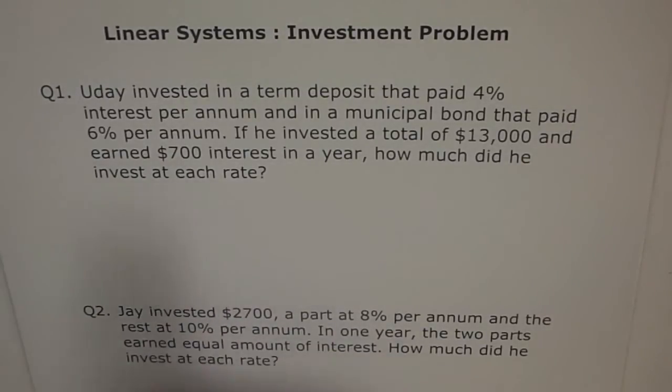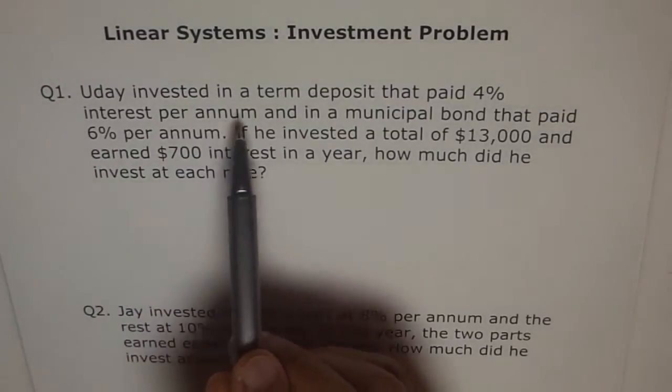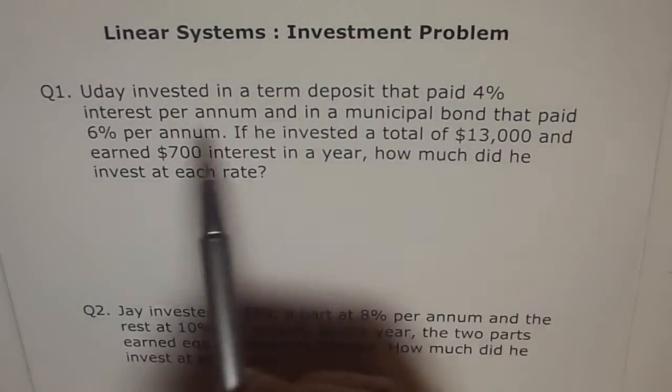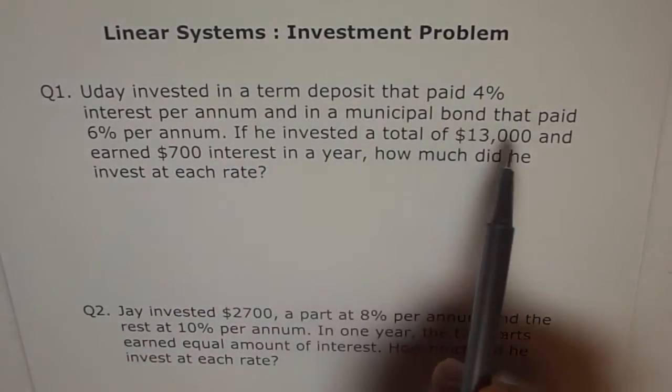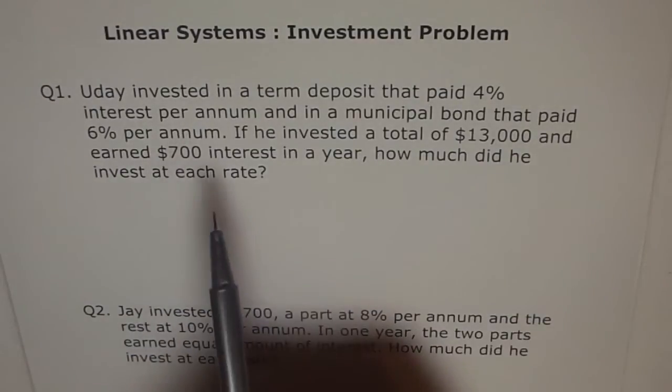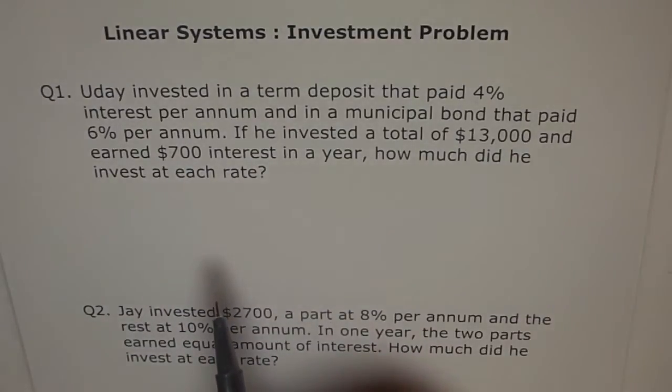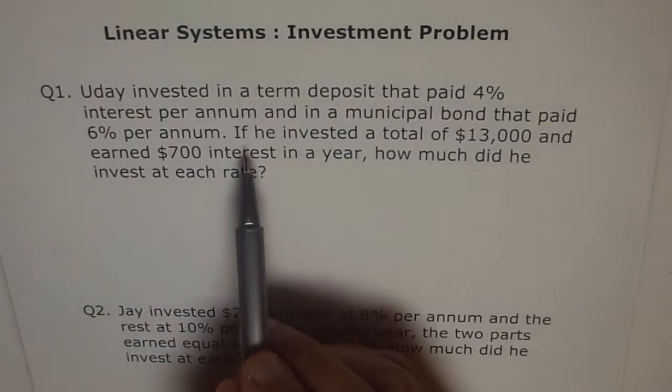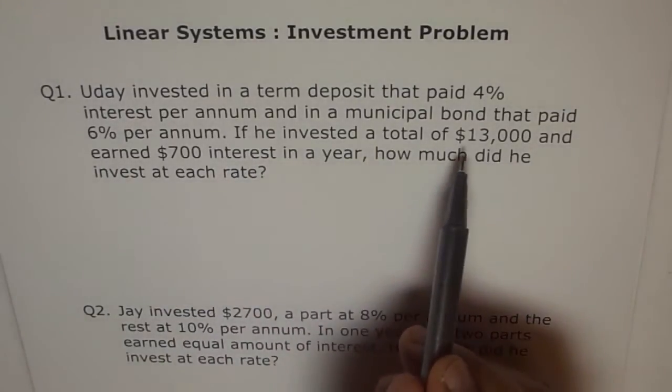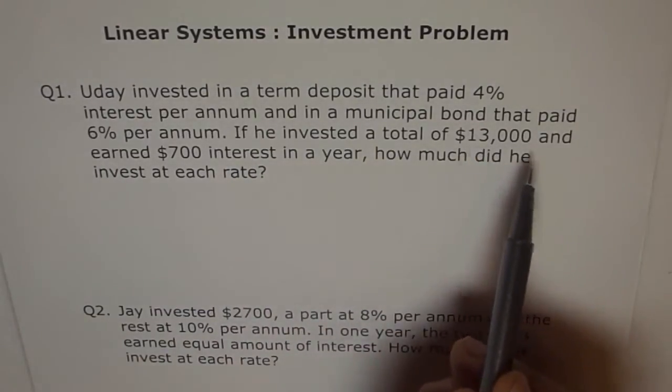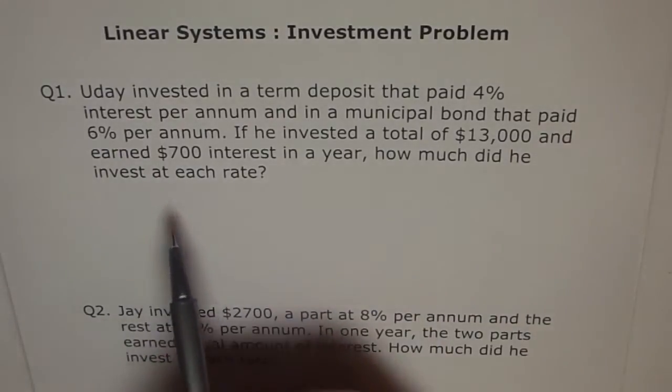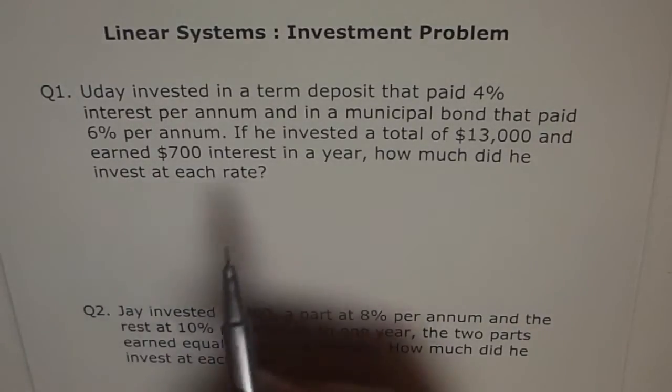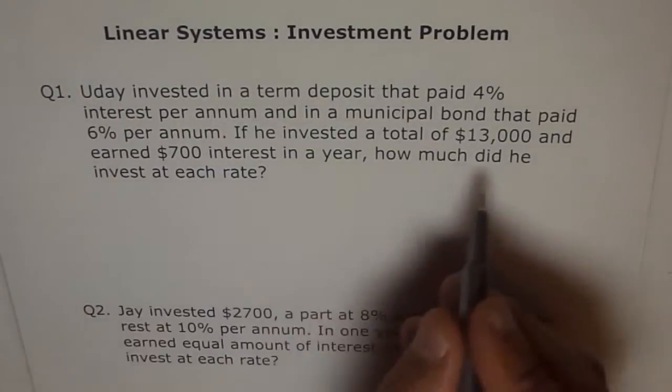Let's try to understand. Read it again. Uday invested in a term deposit that paid 4% interest per annum and in a municipal bond that paid 6% per annum. That means he invested in two places. And if he invested a total of $13,000 and a total of this much in a year, how much did he invest at each? Basically, he started with $13,000.